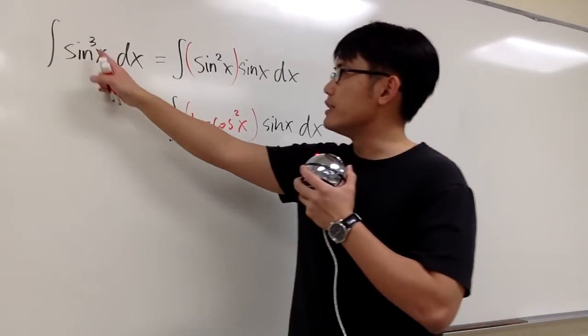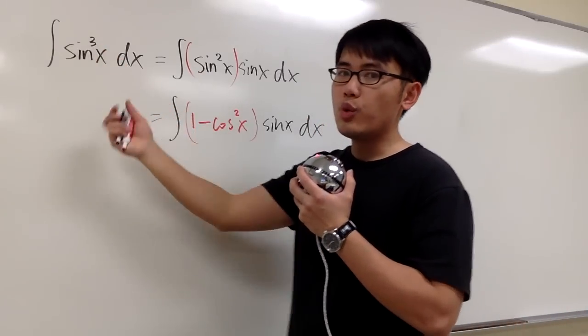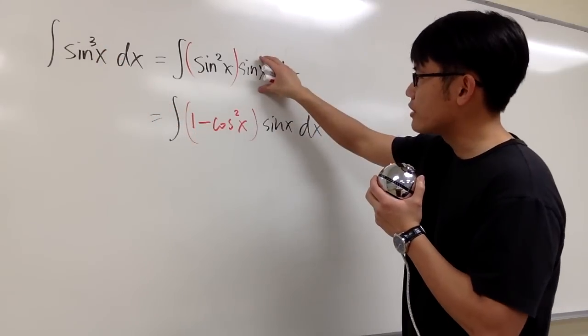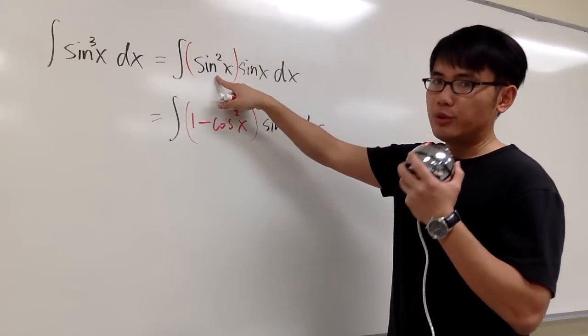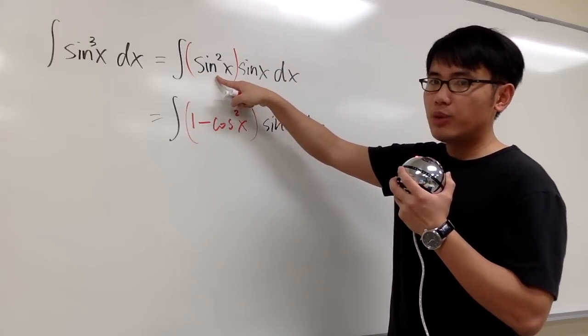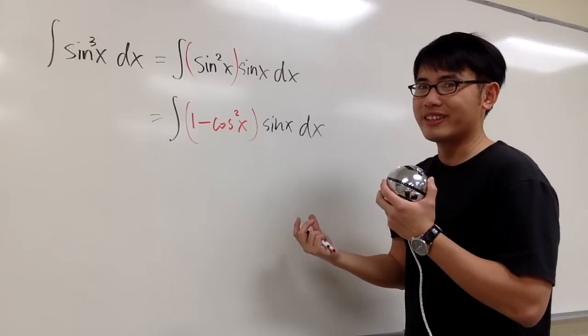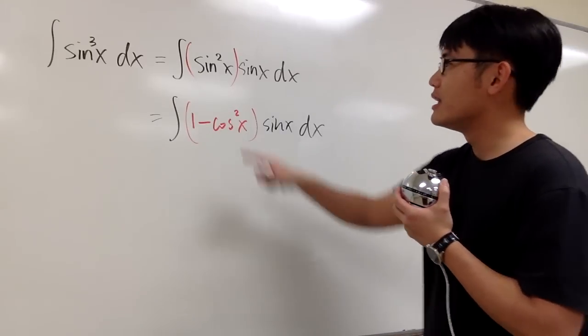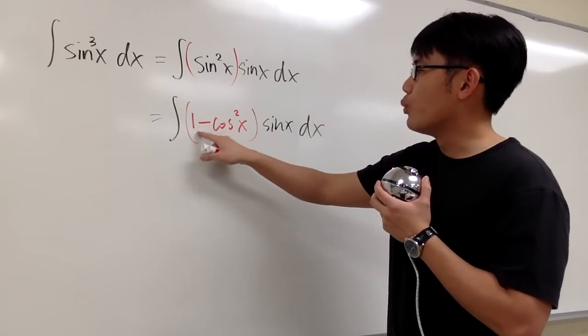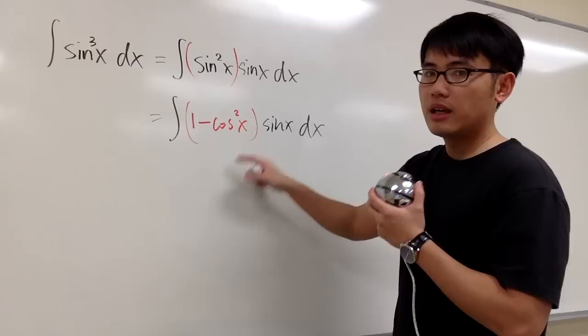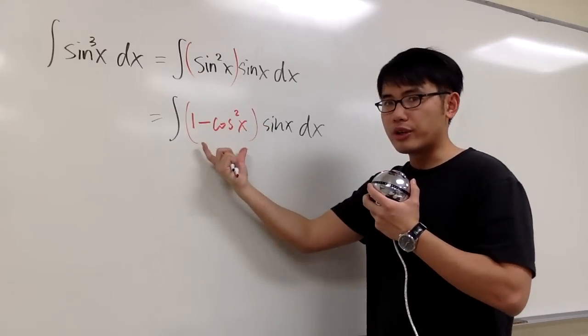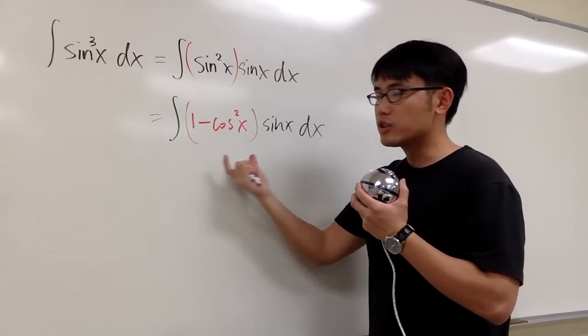The strategy is, if you start off with an odd power for sine, you want to take out one of the sine factors, and then you look at the remaining even power, and then you want to use the sine-cosine conversion. I will just say that's a conversion, not a power reduction formula. Sine squared x is the same as one minus cosine squared x. And you see, this expression right here is in terms of cosine.